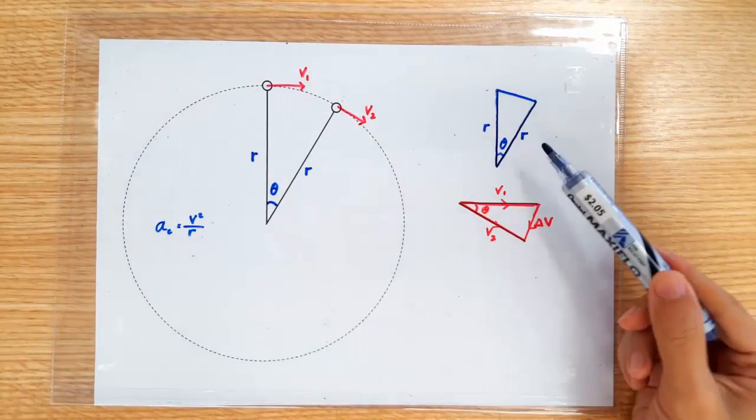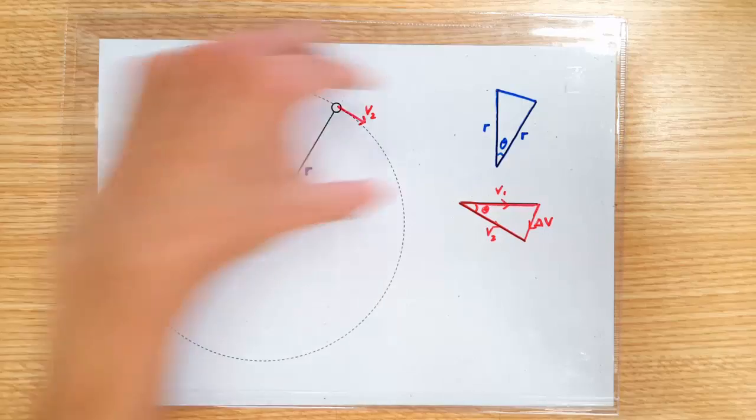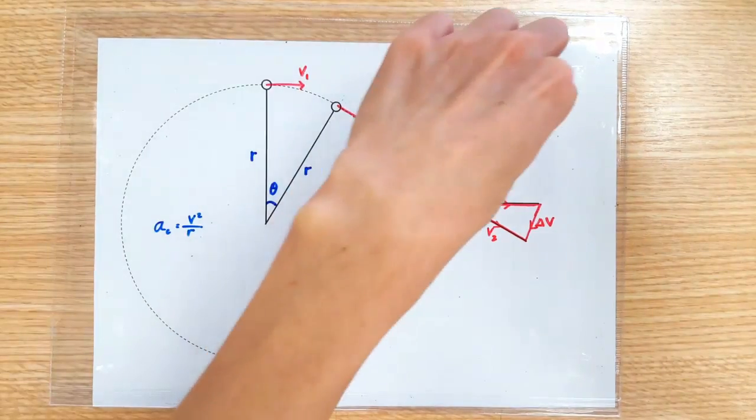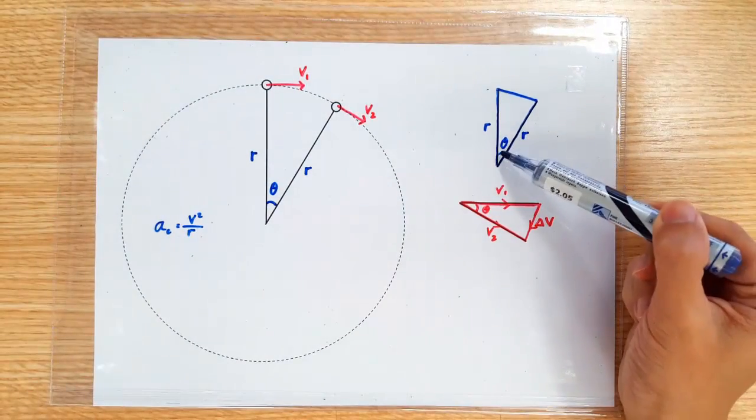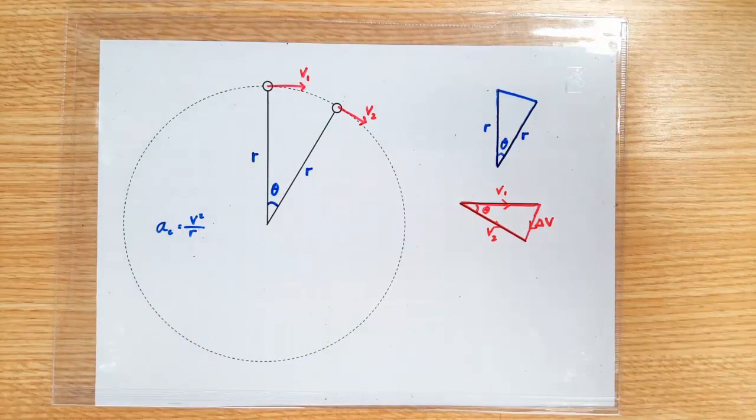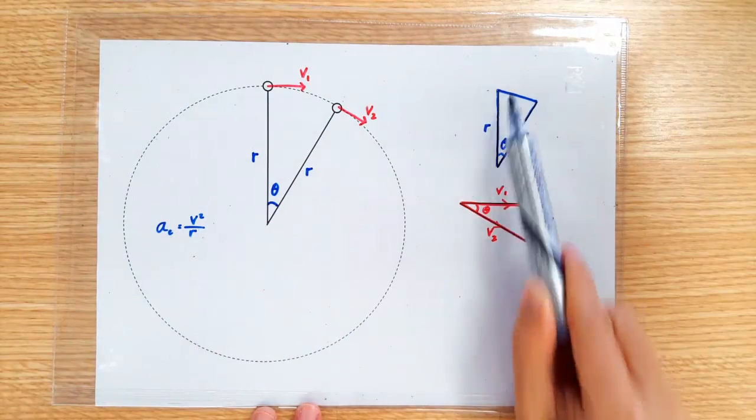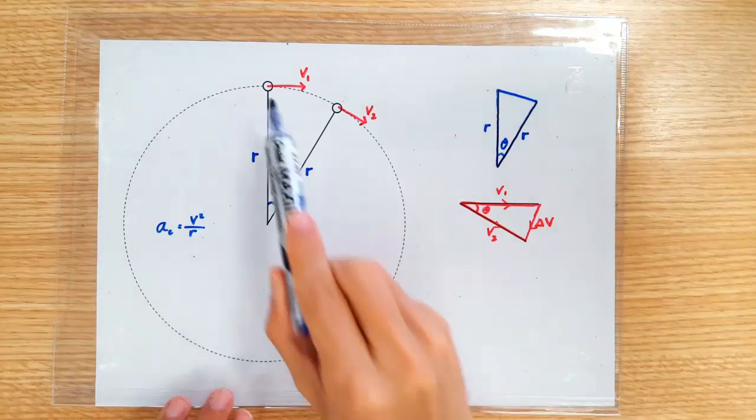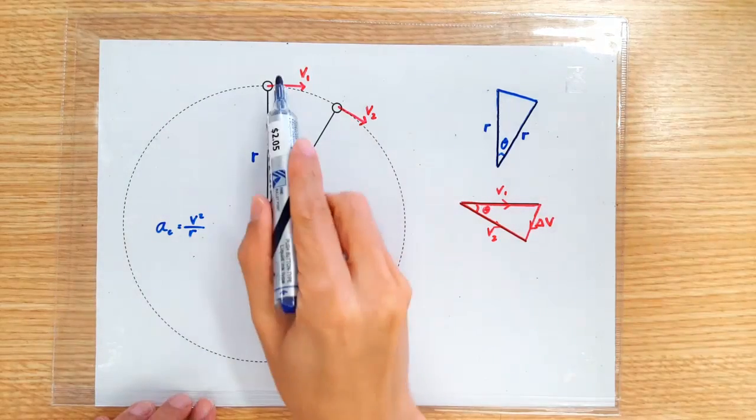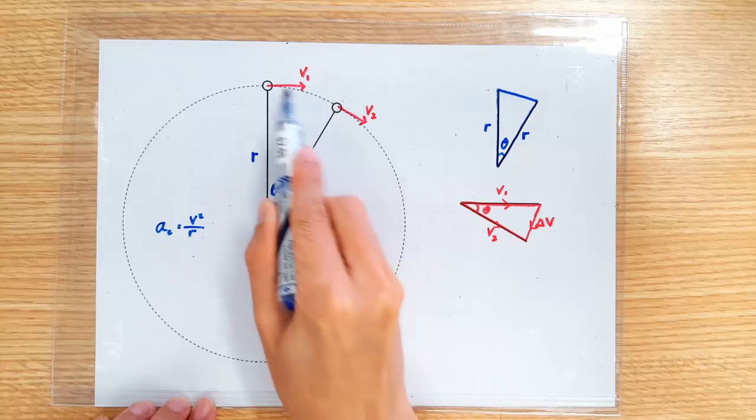Let's draw another triangle based on r and r. Of course, this angle here will be theta. So, what should the third side of this triangle correspond to? Now, look here. The arc length, this arc length...